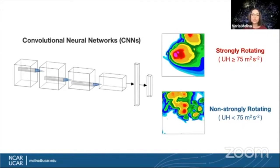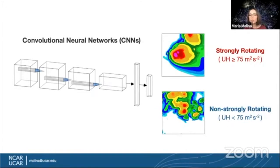In past studies of severe storms using high-resolution model output, certain fixed thresholds of updraft helicity have shown good performance for identifying storms more likely to produce severe hazards. In the examples shown here, we're considering a threshold of 75 meters squared per second squared. For the example that exceeds that threshold, we can see a more organized structure associated with that storm, and the example below that threshold shows less organized structure, suggesting that storm would be less likely to produce severe hazards.